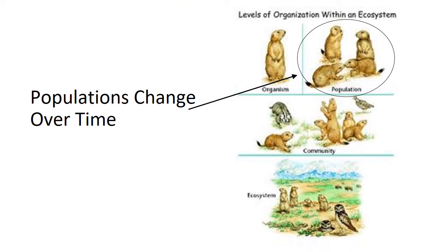Populations do change over time. Organisms reproduce, predators can come into an area and reduce the population, and sometimes the abiotic conditions change — for example, a drought would affect the biotic. So the abiotic does affect the biotic, and populations change over time as a result.